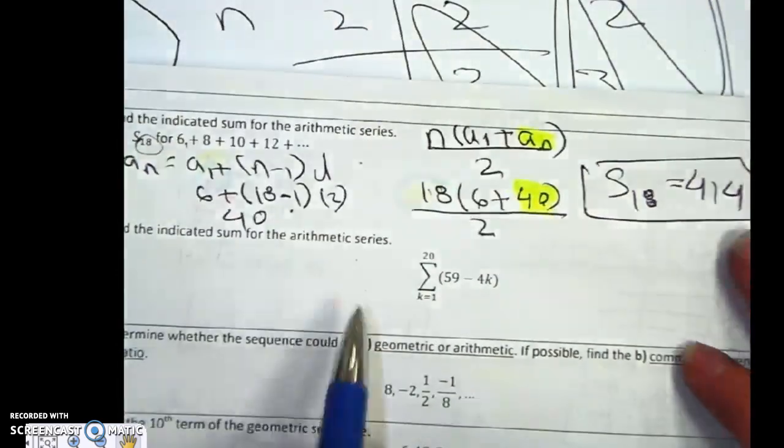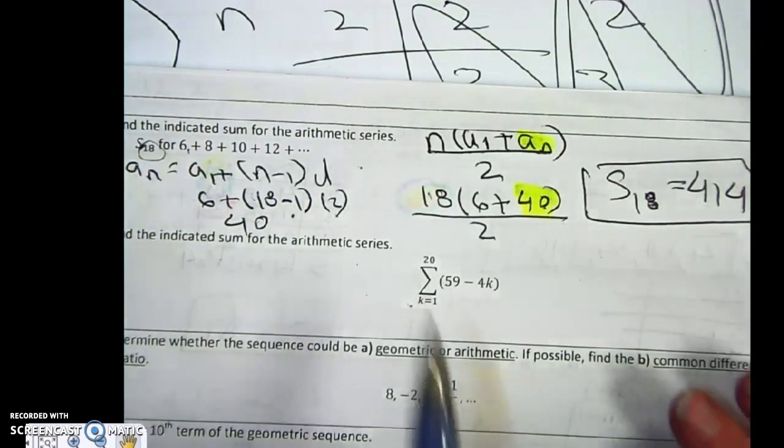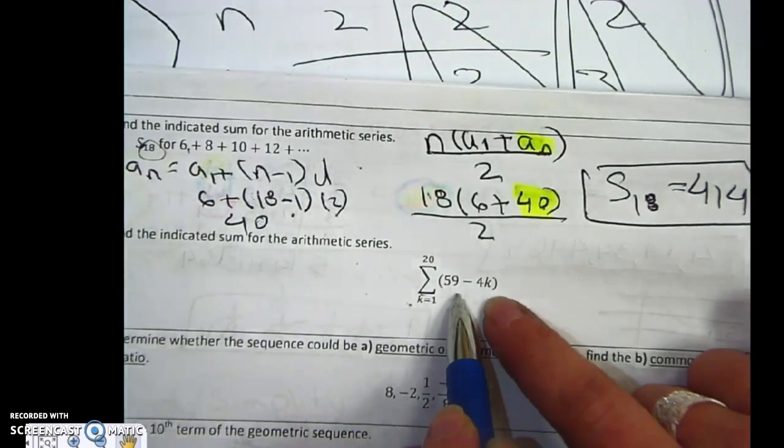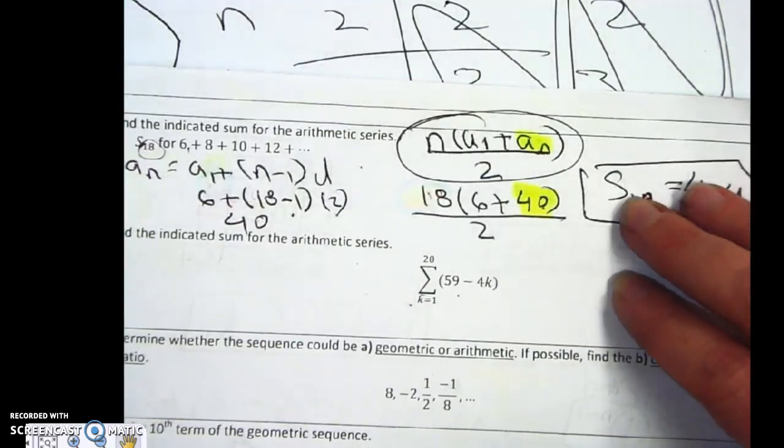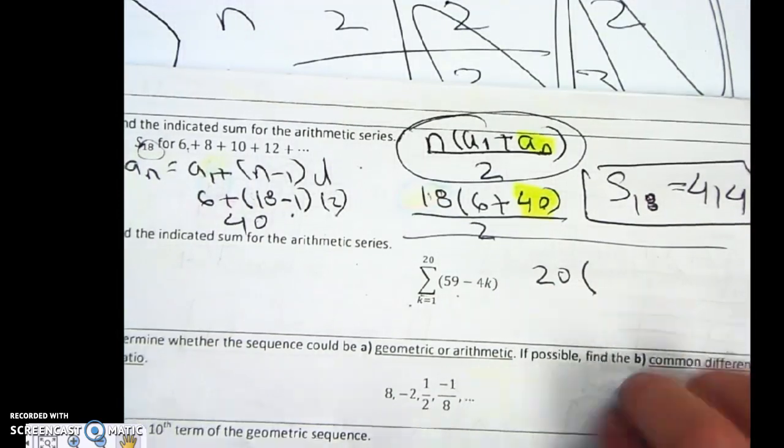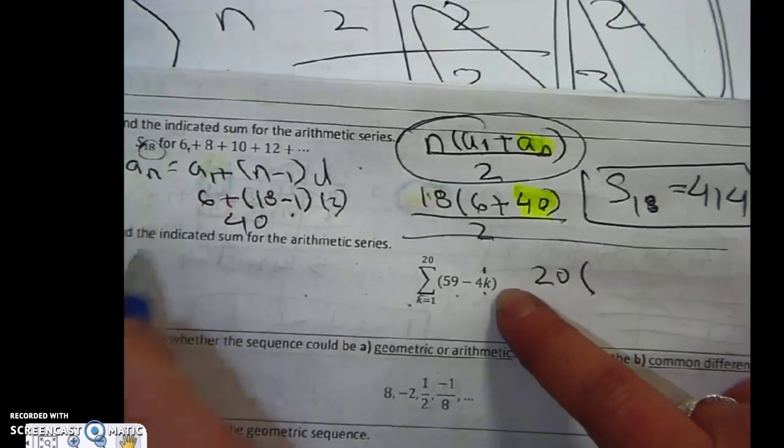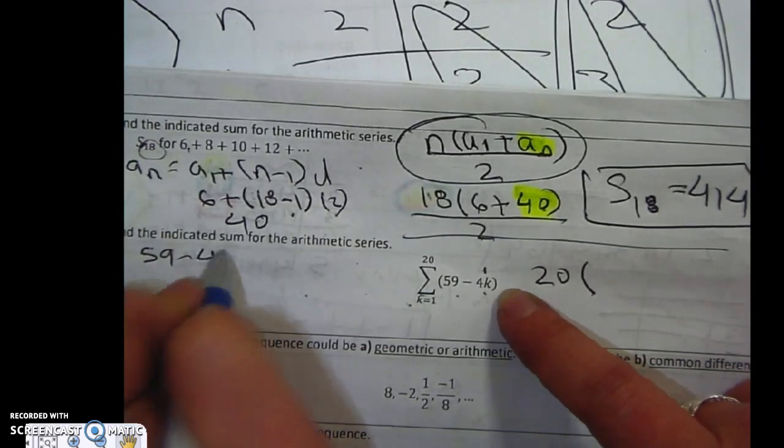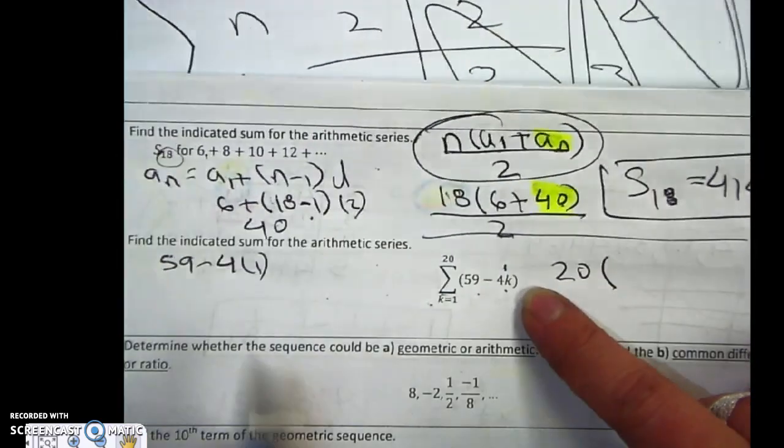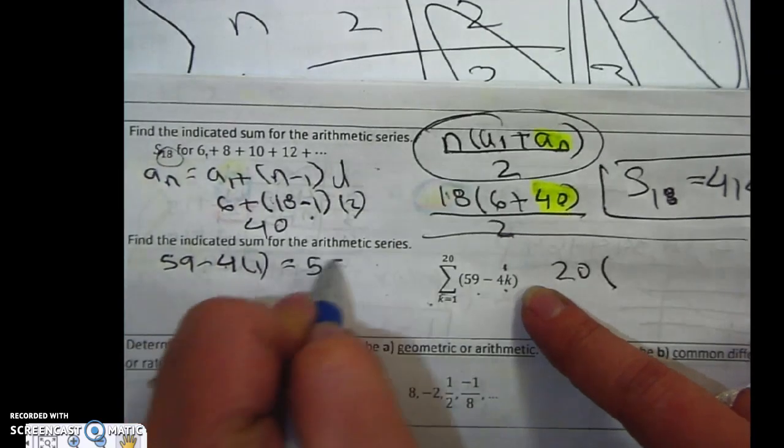Now I'm going to do the next problem. This next problem is the exact same but a little bit different. They want the sum of the first 20 numbers. I'm going to plug in 20. Now the difference is I have to find the first term. I don't see the first term there. But if I plug in 1 right now, I can actually figure out my first term. 4 times 1 is 4. 59 minus 4 is 55. So that's my first term.